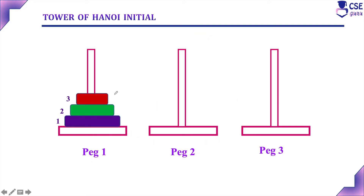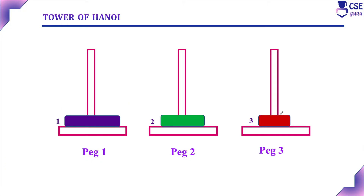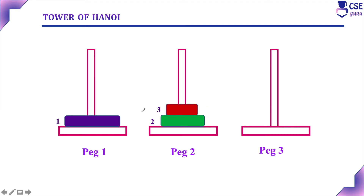To move N-1 disks from peg 1 to peg 2, we will use peg 3 as auxiliary. First, move disk number 3 from peg 1 to peg 3. Next, move disk number 2 from peg 1 to peg 2. Next, move disk number 3 from peg 3 to peg 2. Now we have moved N-1 disks from peg 1 to peg 2.